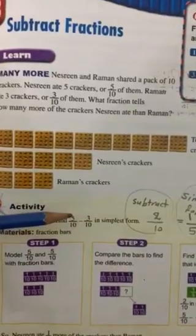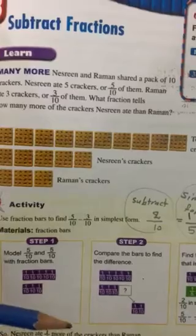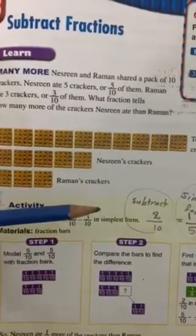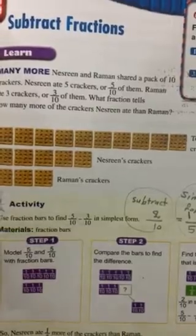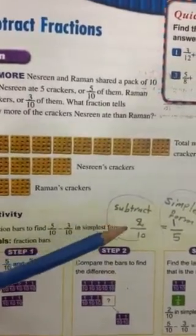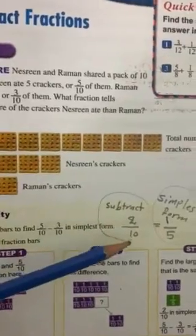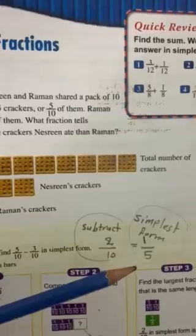So we are going to subtract the top and rewrite the bottom as it is, or subtract the numerator and rewrite the denominator as it is. So the new fraction is 2 out of 10, and in the simplest form equals 1 out of 5.